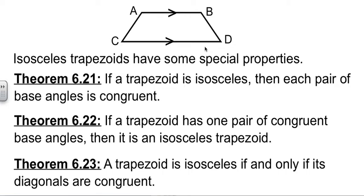When these things are isosceles, we get something useful. In an isosceles trapezoid, the base angles are congruent. So C would be equal to D. Angle A would be equal to angle B.